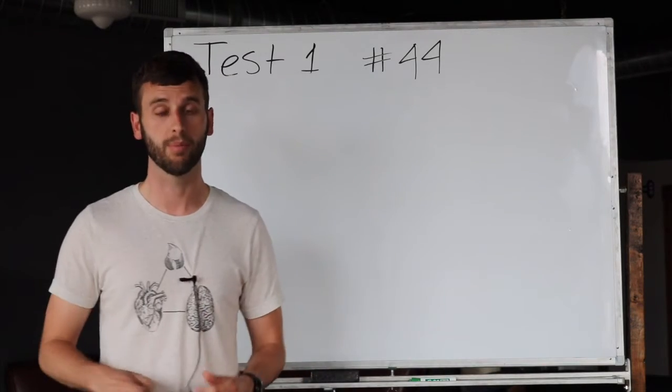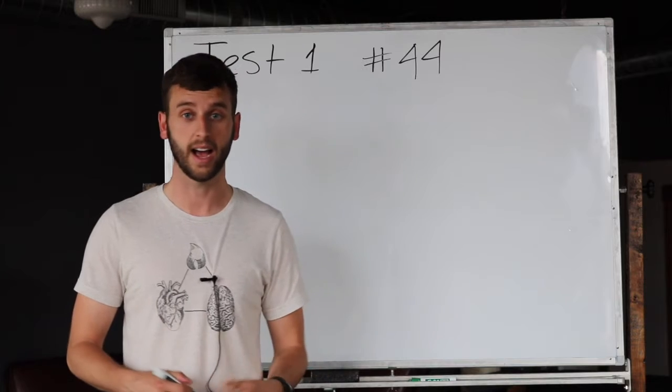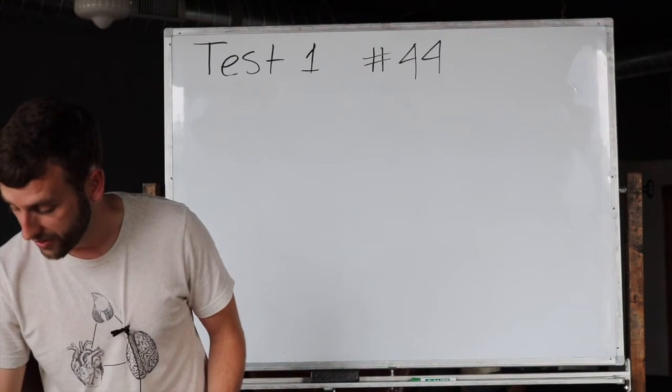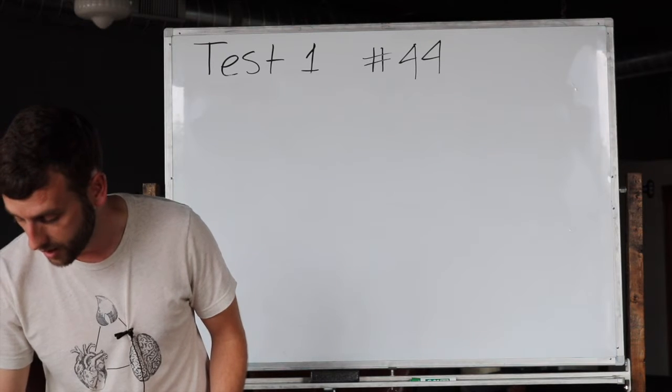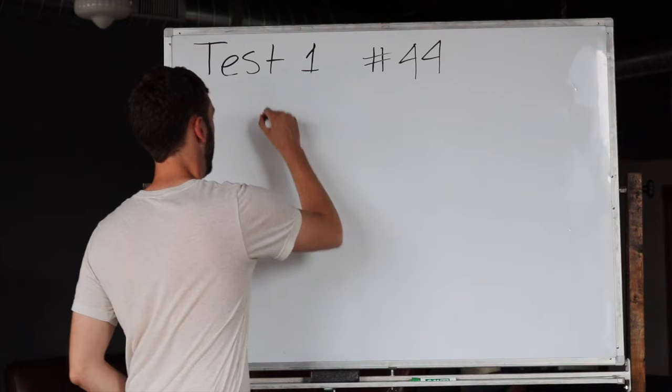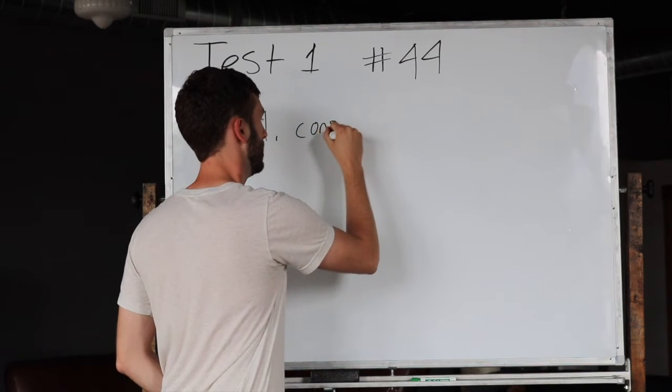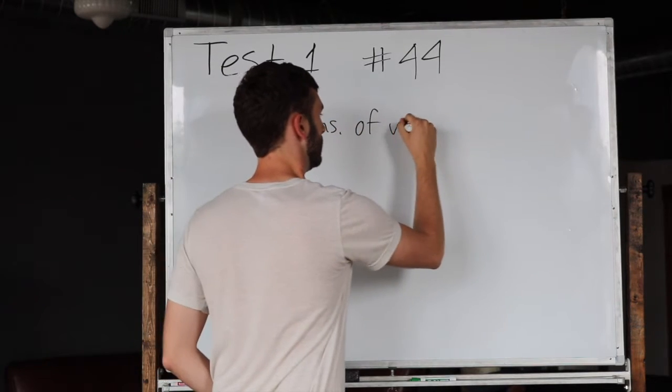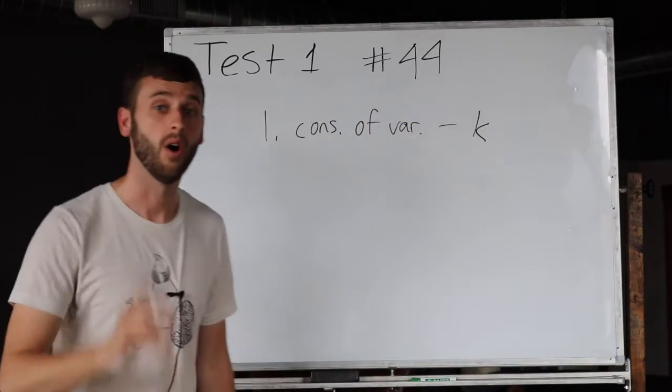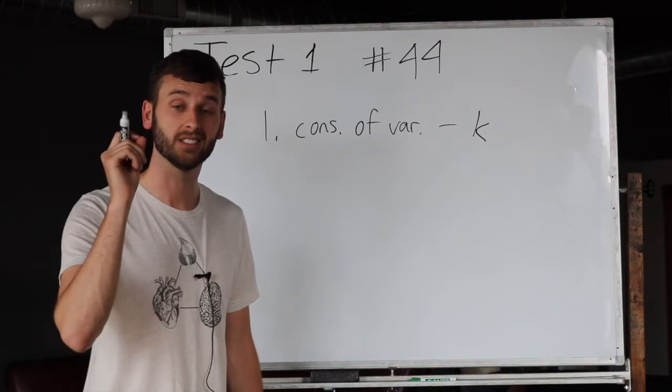First I ask, what am I trying to find? Well, if you go to the end, it tells you that you're trying to find a constant of variation k. So number one, I'm trying to find a constant of variation. Okay, now the second question that I ask is what do I know?